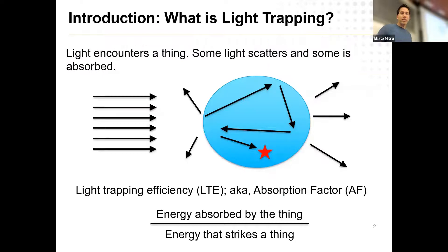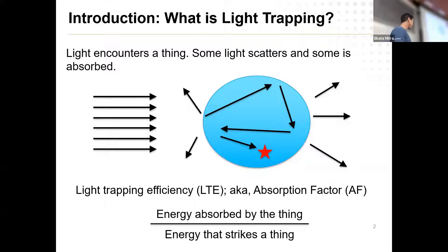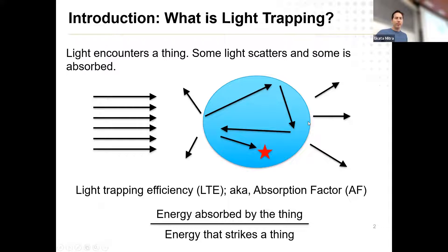This lecture is about light trapping, so just a quick philosophical foundation of what that even means. You imagine something floating in space — that blue droplet there could be like a raindrop being illuminated by light. Some of that light will bounce away, some might transmit through and bounce around and eventually be absorbed, and some might fall away out the back side. We care about the absorbing bits. You take the fraction of light inside the object relative to the total energy striking it — that is what we call light trapping efficiency, or absorption factor.